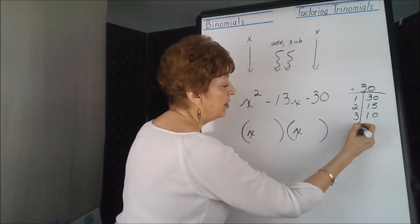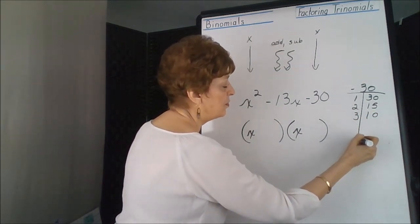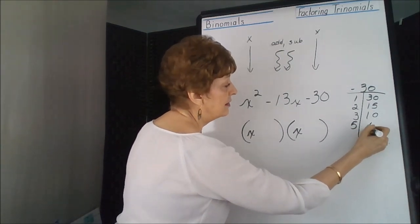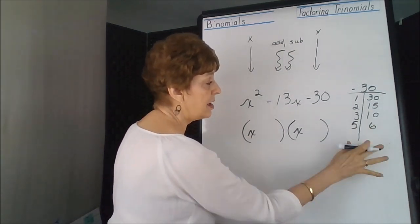4. No, nothing times 4 is 30. 5. 5 and 6. And there we've overlapped. Stop. We're done.